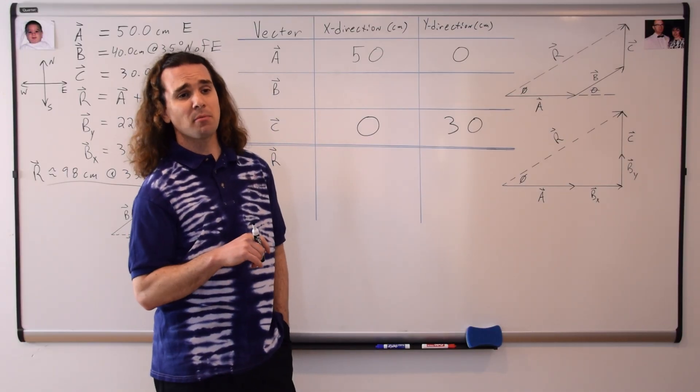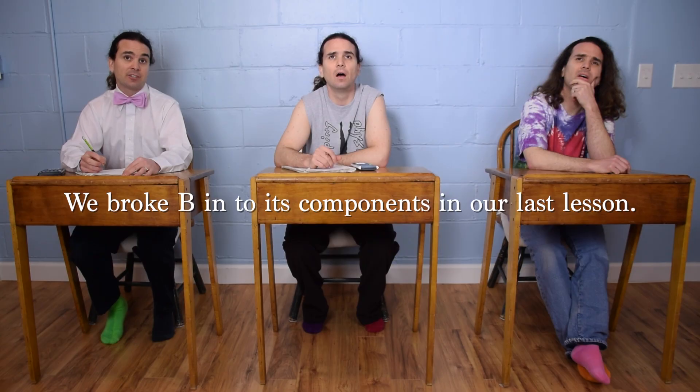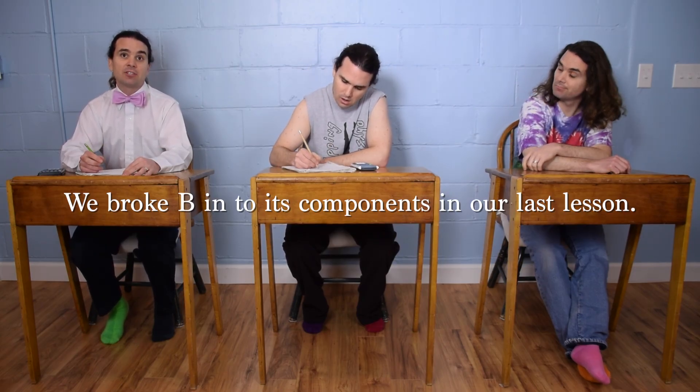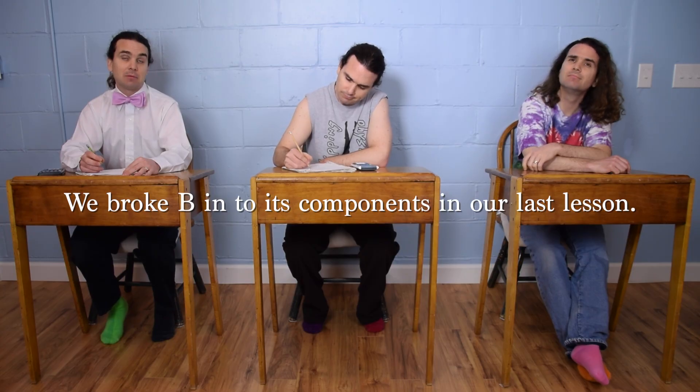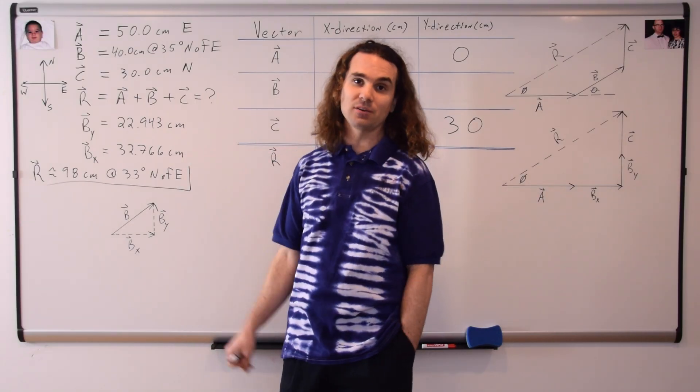And Billy, could you please give me the components of vector B? Those were already written on the board, actually. B in the x-direction is 22.943 centimeters, and B in the y-direction is 32.766 centimeters. You are correct. We already figured out the components of vector B in the x and y-directions.